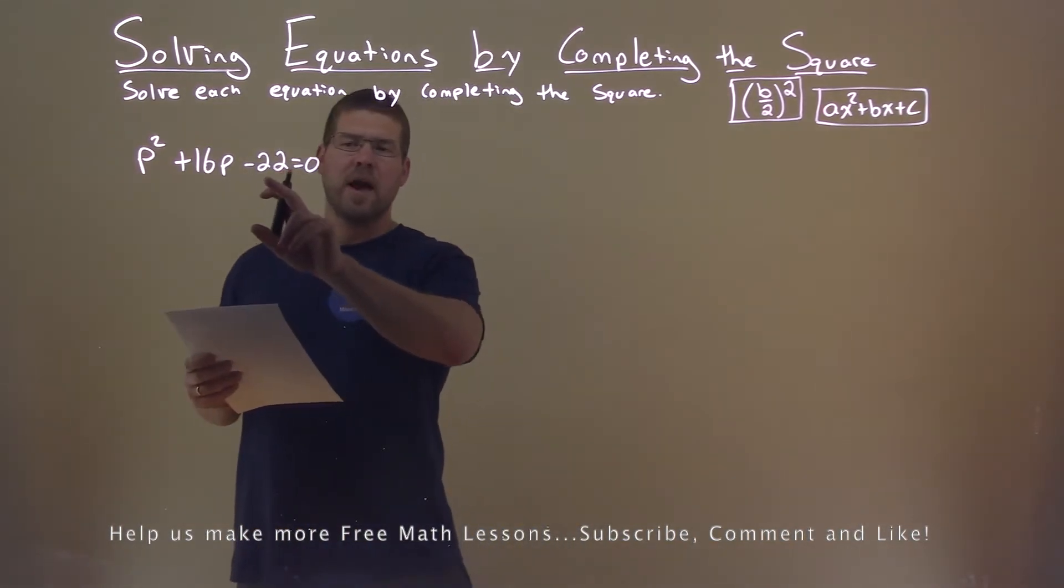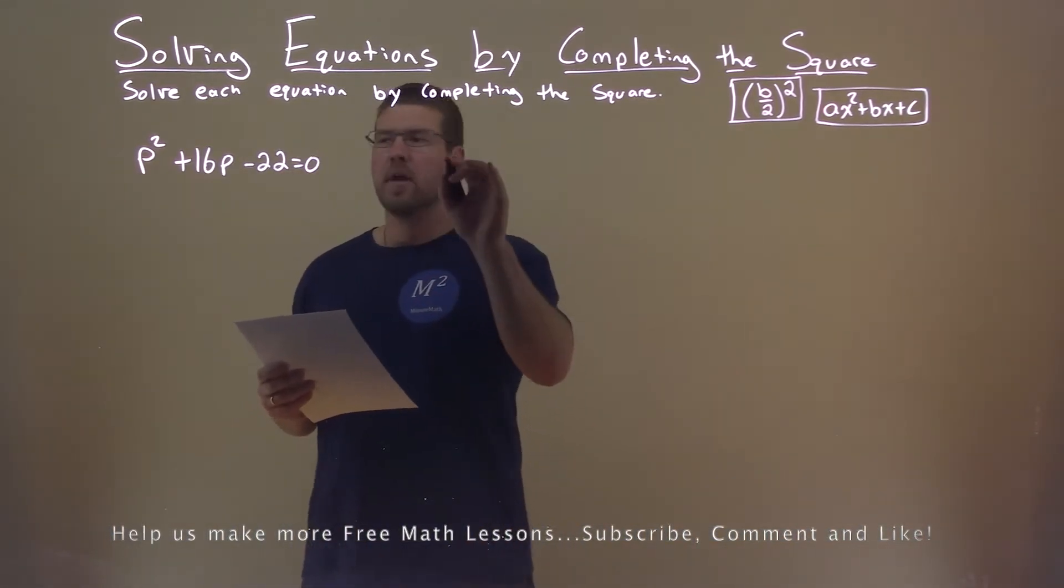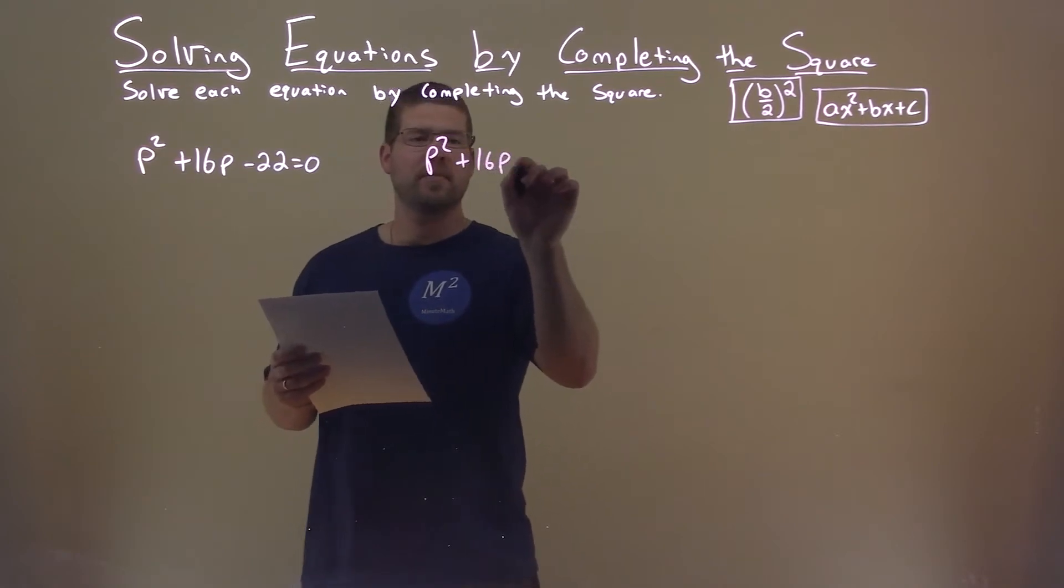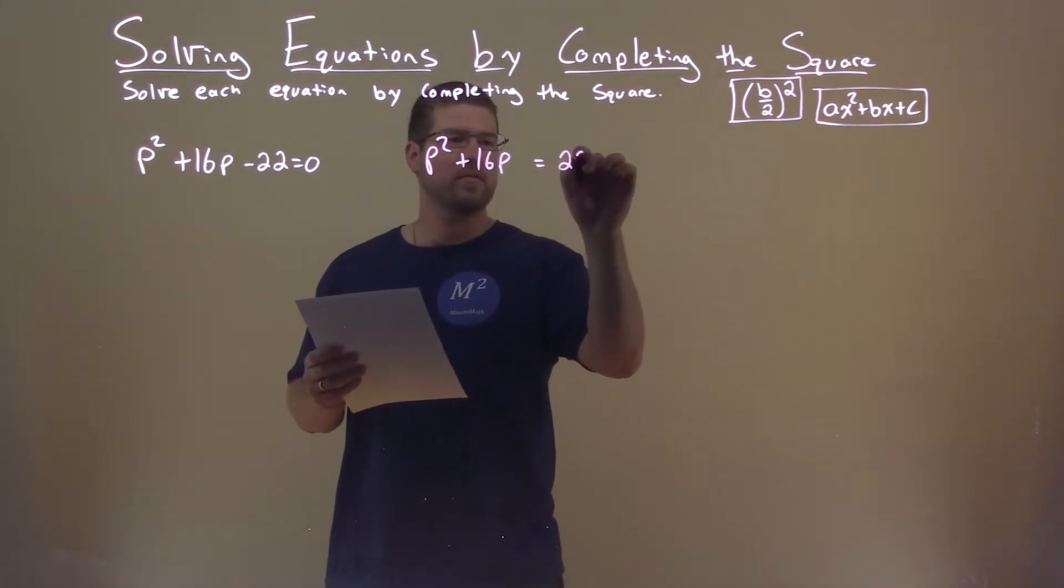First thing I'm going to do is add a 22 to both sides. So we have p squared plus 16p equals a positive 22.